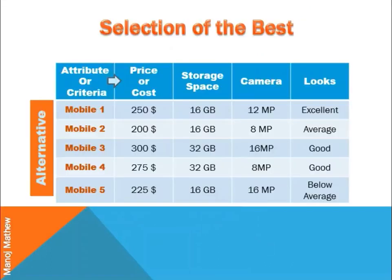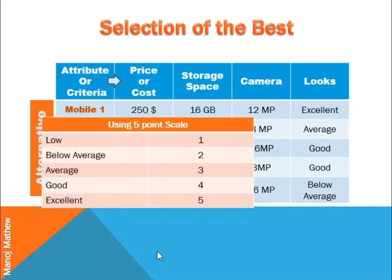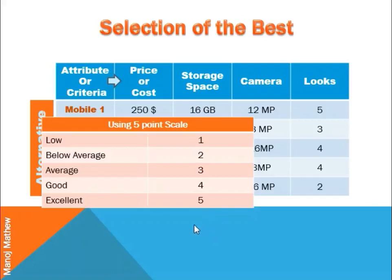We are dealing with the situation of selecting the best mobile phone out of five available alternatives based on four criteria: price, storage space, camera, and looks. I converted the linguistic terms used in 'looks' using a five-point scale where 'excellent' was given five points and 'poor' was given one point. Now the values were substituted.